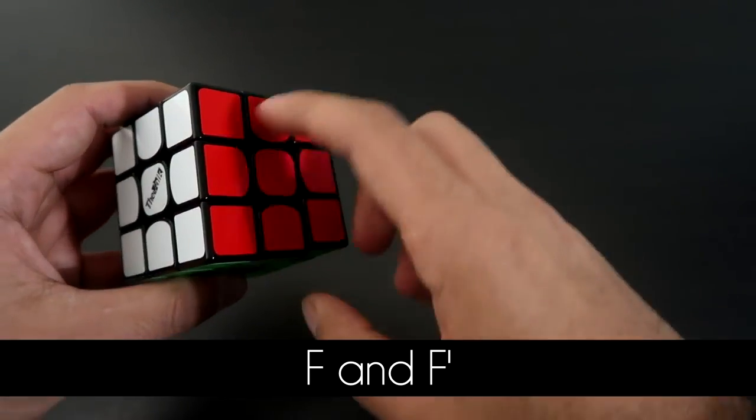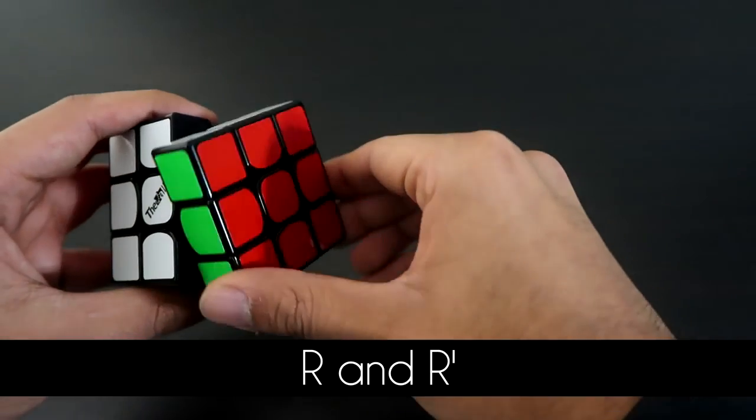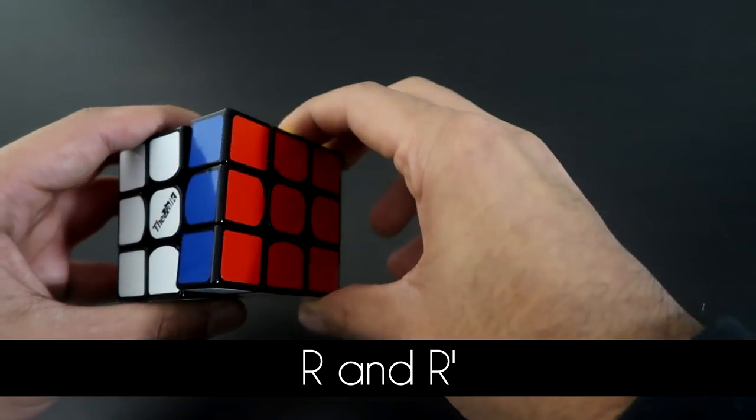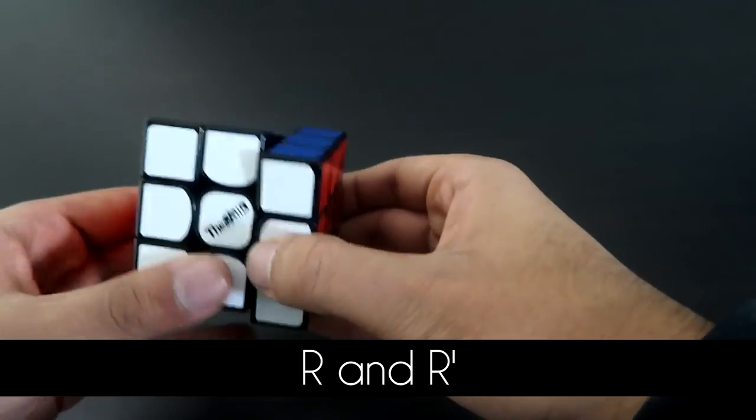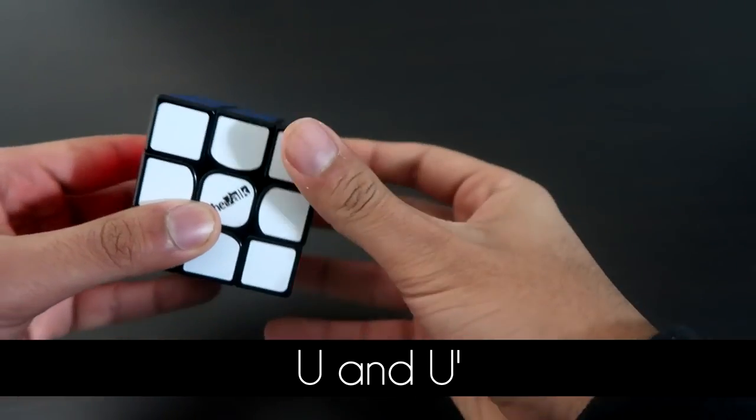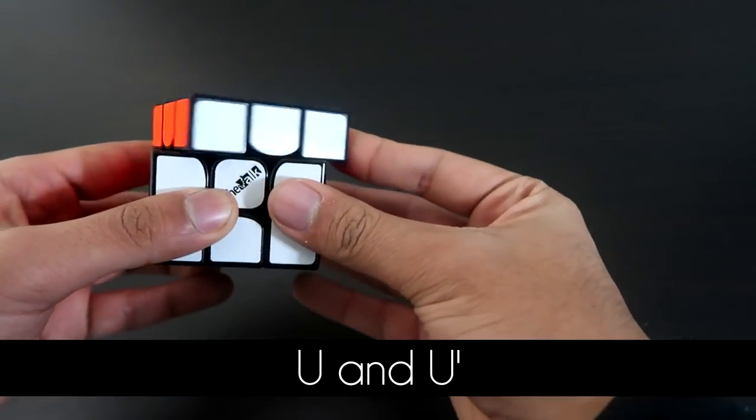Now this is the right side, and this is going to be right, and then this is going to be right prime. Moving along, this is going to be the top side, so this is up and then this is up prime. As you can see, prime always moves to the left.